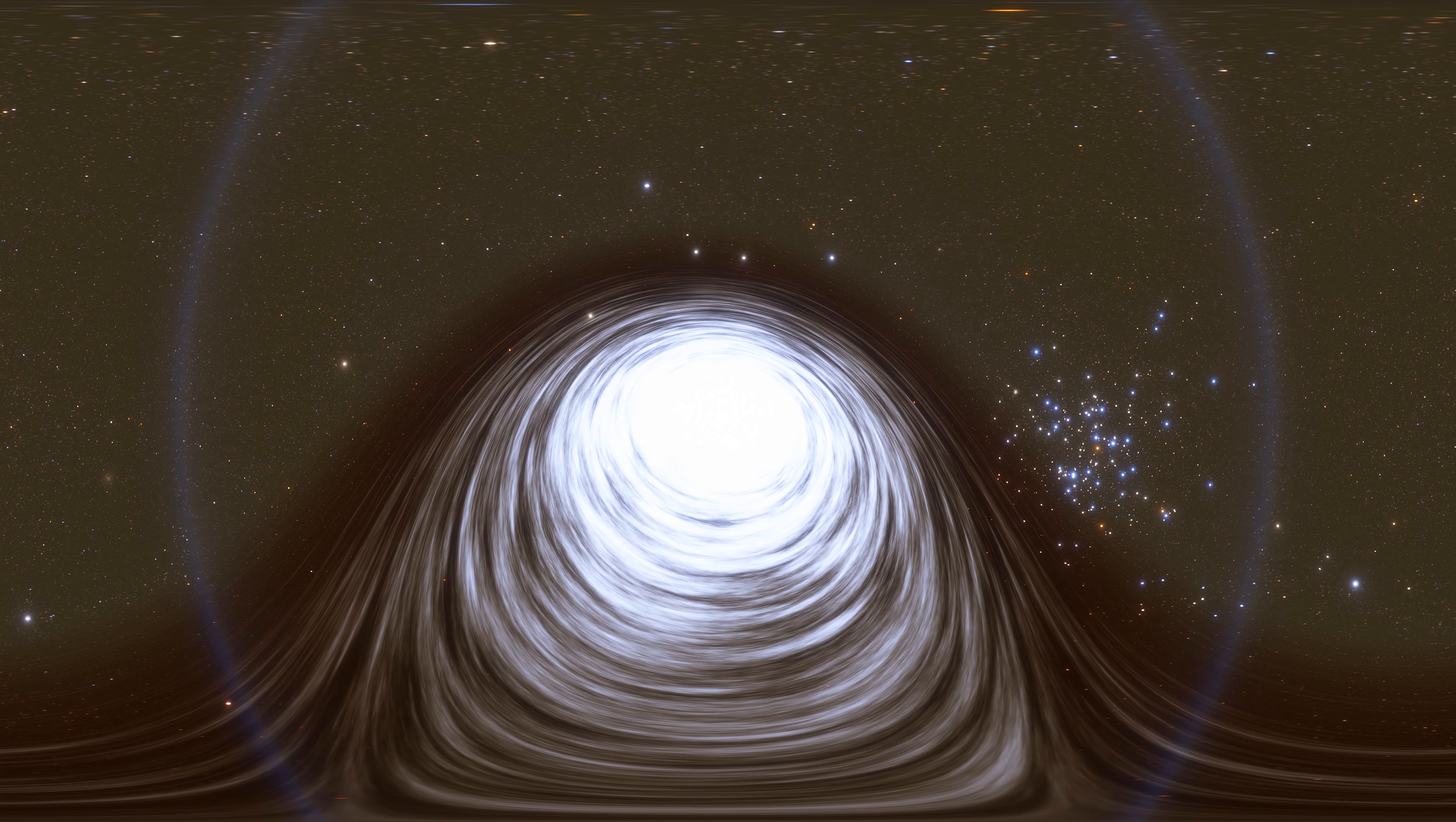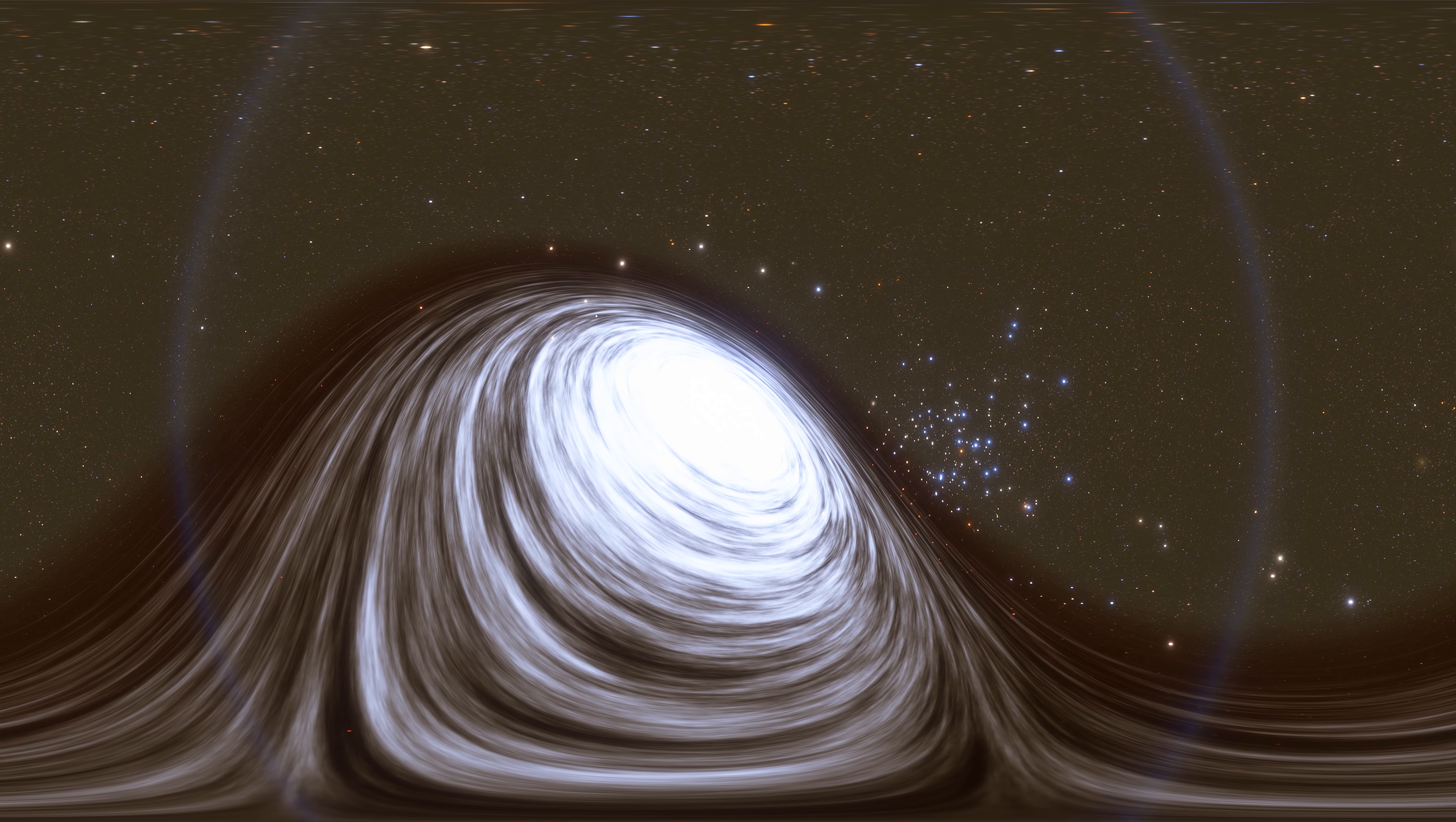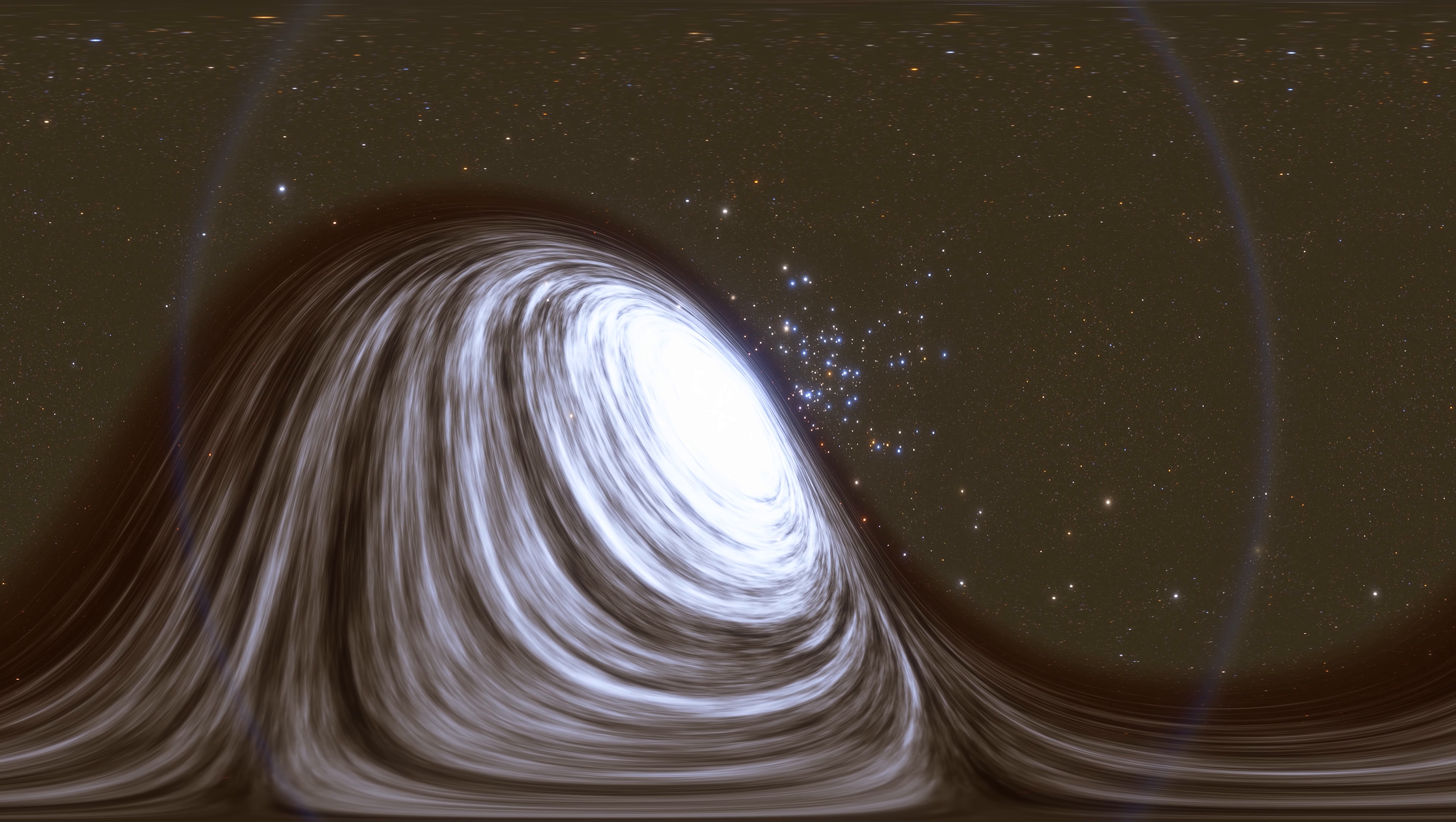Messier 87 is a supergiant elliptical galaxy in the Virgo constellation. In the core of this galaxy is placed a supermassive black hole which forms the primary component of an active galactic nucleus. M87 black hole is located about 55 million light-years from Earth. Its mass is about 6.5 billion solar masses and 38 billion kilometers across.